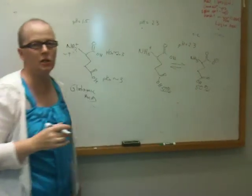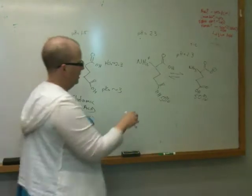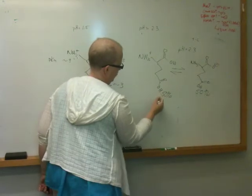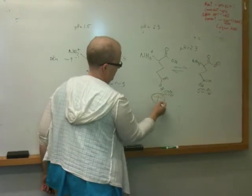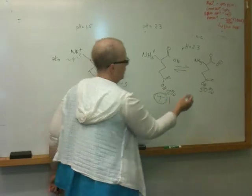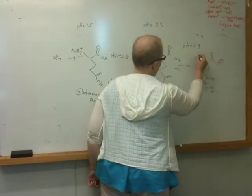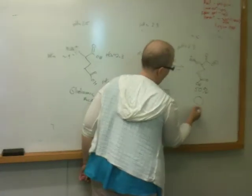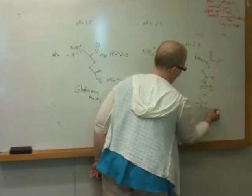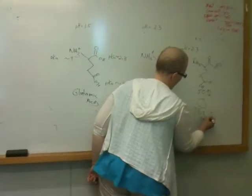So are either of these the isoelectric structure? When I look at this, this has a net charge of plus 1. This has a net charge of 0. This is the isoelectric structure.